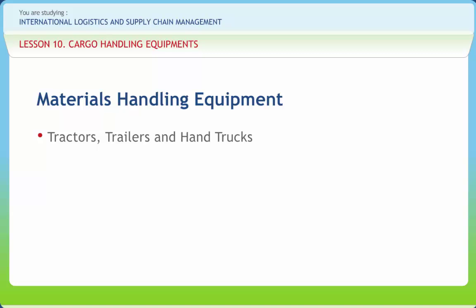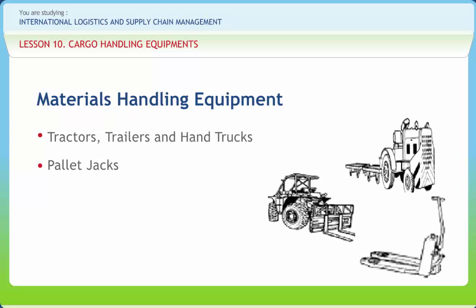Hand trucks are used for moving packages too heavy to be moved by hand. Some hand trucks have folding wings and curved braces between the legs so they can carry drums and barrels as well as other types of packages. The pallet jack is a low-level hydraulic lift suitable for the horizontal movement of certain types of pallets. One person can operate this jack, and it is low enough to be passed through the opening in the bottom of a pallet.